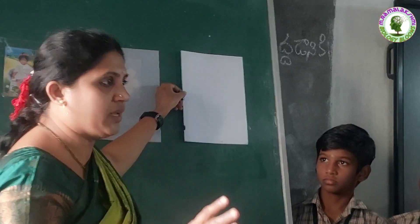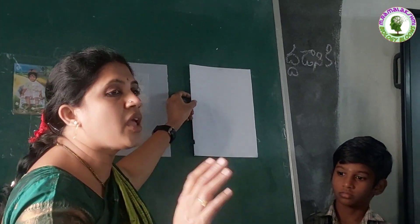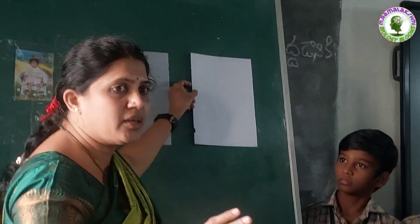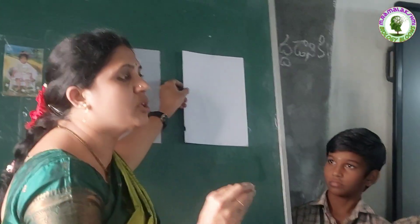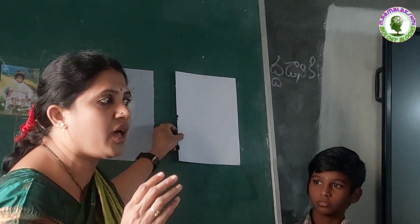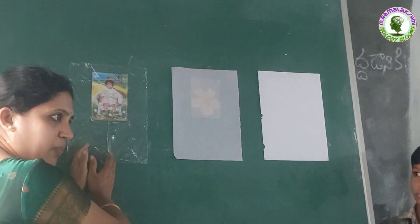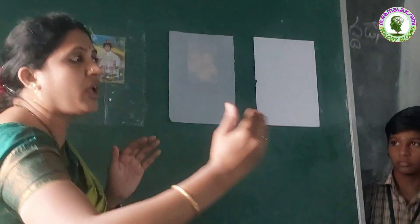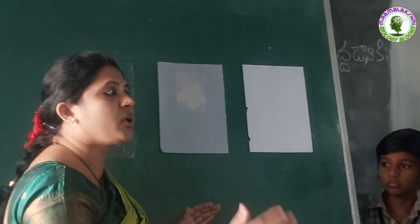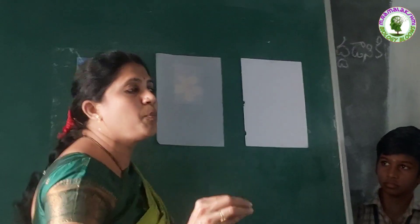Here, we are unable to see that image, because it is covered by a paper. This paper does not allow the light to travel through it. So you are unable to see the image. These type of objects are known as opaque objects. What are they? Opaque objects. So: transparent objects allow light to travel through them; translucent objects allow light partially to travel through them; opaque objects do not allow light to pass through them.